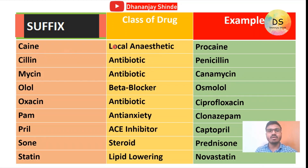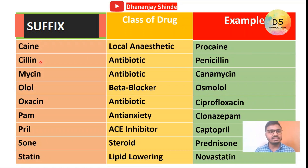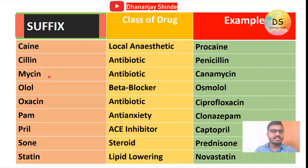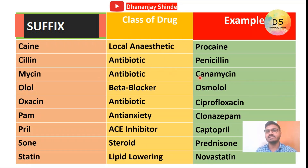The example for '-caine' is procaine. The next suffix is '-cillin' — if a drug's suffix is '-cillin', then the class of drug will be antibiotic, and the example is penicillin. Next is '-mycin' — if the suffix of a drug is '-mycin', then the class of drug will be antibiotic, and the example is kanamycin.